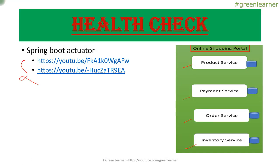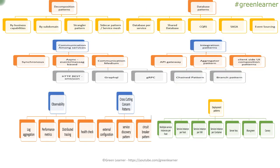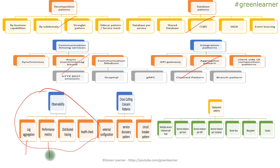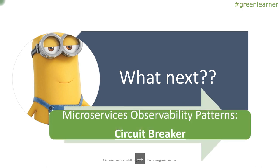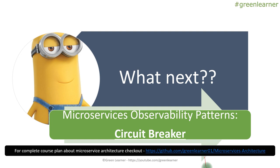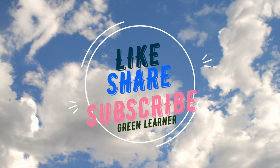So that's all about the observability patterns. Looking at the big picture, we have covered decomposition, database patterns, communication, integration patterns, and now observability — log aggregation, distributed tracing, performance metrics, and health check. These are all related and very important. Demos for distributed tracing and health check are already on the channel. The next topic coming up is cross-cutting concerns, specifically the circuit breaker pattern. You can find all microservices architecture topics via the direct link.